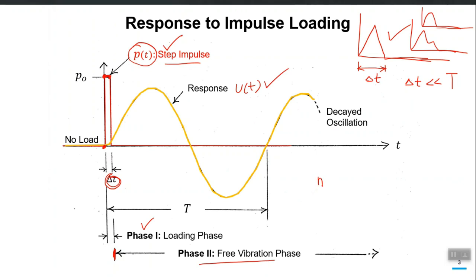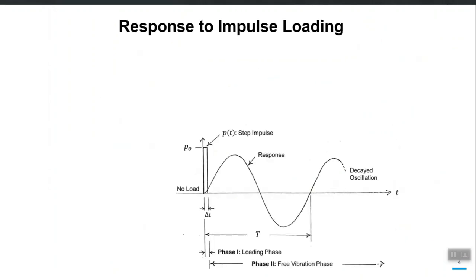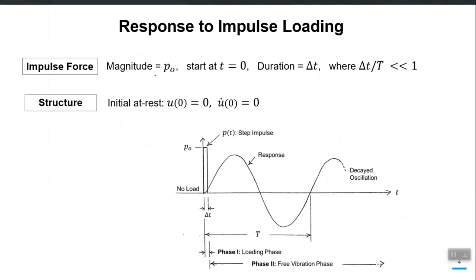The governing equation of motion will be the same: m·ü(t) + c·u̇(t) + k·u(t) = p(t). Here p(t) represents this rectangular impulse loading. The impulse is defined by its magnitude p-naught and duration delta-t, starting at t equal to zero. And delta-t over capital T is far less than one — this is the definition of impulse. Our rectangular or step impulse is described by just these two quantities: delta-t and p-naught.